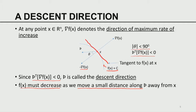We are interested in descent directions because minimization means finding the point where the function takes its least value. It makes sense to search for good descent directions and move along them to find the minimum. If trying to maximize, you would consider ascent directions. Without loss of generality, we only consider descent directions in our discussion.